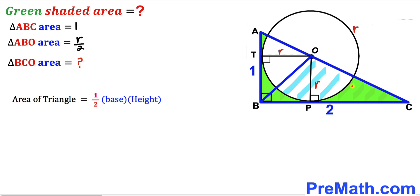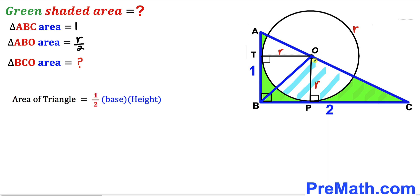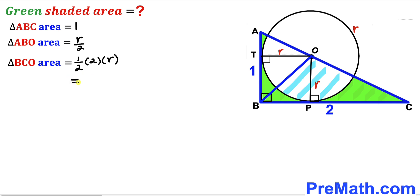Finally, we calculate the area of triangle BCO using the same formula. For this triangle, the base is two units and the height is OP, which is the radius r. So the area of triangle BCO equals one-half times two times r, which simplifies to r.